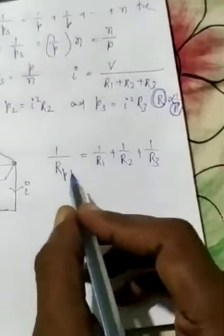Heat is directly proportional to the square of current, directly proportional to the resistance, and directly proportional to the time. Law of current: the amount of heat generated in a conductor varies directly proportional to the square of the current when the resistance and time are kept constant — so H is directly proportional to I square. This is the law of current.